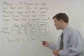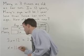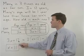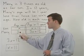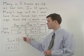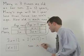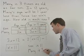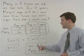Solving this equation, we can find that x equals eleven. What that means is that the son's age now is eleven. So Mary's age now is three times eleven, or thirty-three. So her son is eleven and Mary is thirty-three, and that's our answer.